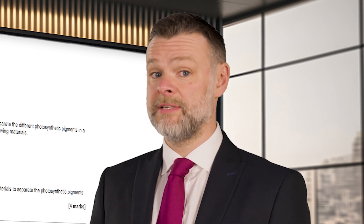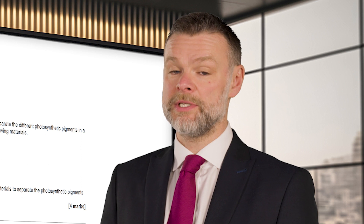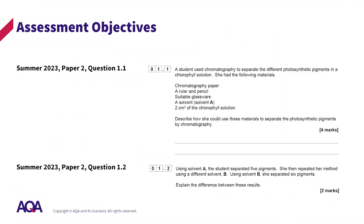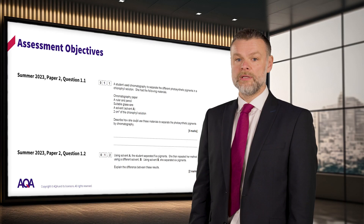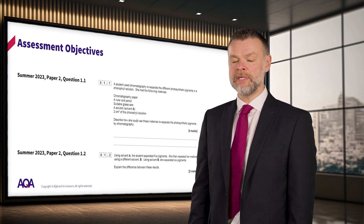Now we've discussed assessment objectives, it's time for a quick 'know your assessment objective' activity. See if you can apply your knowledge of the assessment objectives to guess which objective is being tested in each of the following questions. Here is your first question. Identify which assessment objective — AO1, AO2 or AO3 — is being tested in the two questions visible on screen now. You are correct if you suggested that question 1.1 is assessing AO1 and question 1.2 is assessing AO2.